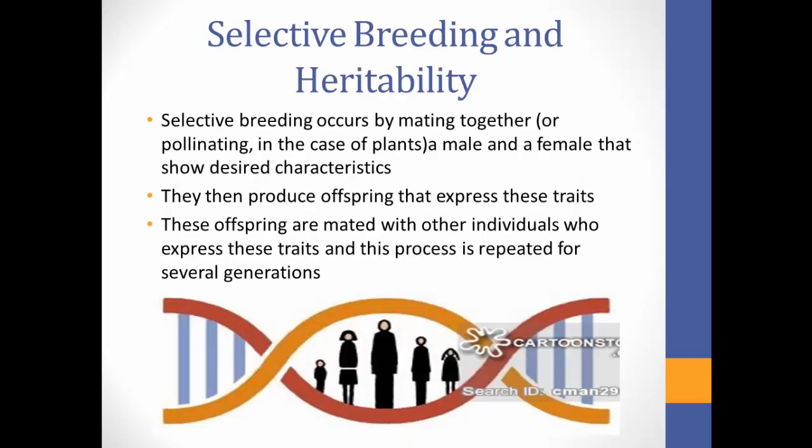In order to selectively breed plants or animals, a male and female must display desired traits and are mated together to produce offspring that express these traits. The more these traits are expressed in offspring, the more heritable they are said to be — meaning the traits are easily inherited from one generation to the next.